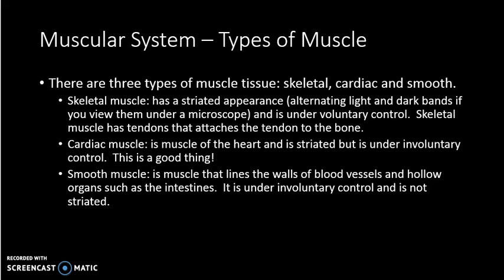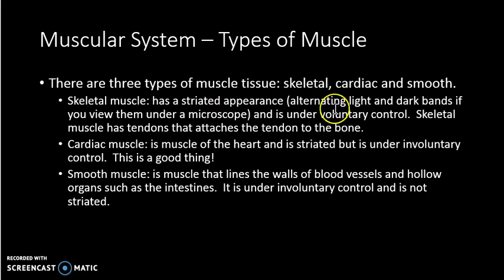There are three types of muscle: skeletal muscle, cardiac muscle, and smooth muscle. In this subject we're primarily focused on skeletal muscle. Skeletal muscle is the muscle that moves the skeleton and is used in physical activity. It's known for a striated appearance — an alternation between light and dark bands when viewed under a microscope. It is voluntarily controlled, meaning you make the decision as to whether to move it.